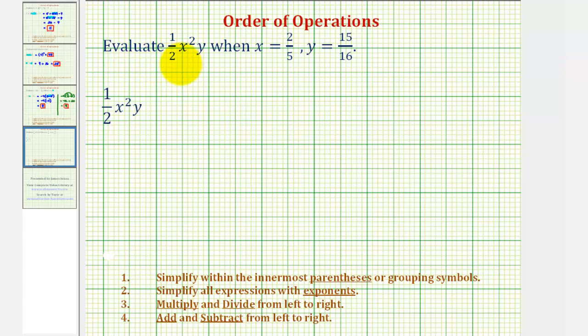We want to evaluate the variable expression one-half x squared y when x equals two-fifths and y equals fifteen-sixteenths. So for the first step, we'll perform substitution for x and y, and then evaluate the expression using the order of operations outlined below.